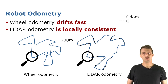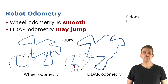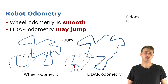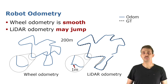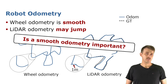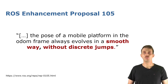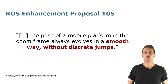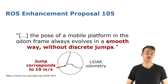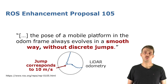If we zoom in at a particular point, we can see that the wheel odometry is very smooth because we use a motion model, whereas the LiDAR odometry has jumps — in this particular scene the jump is about one meter between two scans. Is smooth odometry actually important? Yes. The ROS Enhancement Proposal 105 states that the pose of a mobile platform in the odom frame should always evolve in a smooth way without discrete jumps. In our LiDAR odometry example, that jump would correspond to a velocity of 10 meters per second, which is very unlikely for our platform.